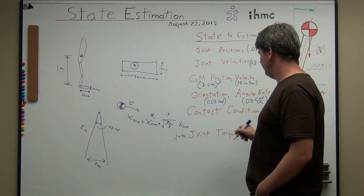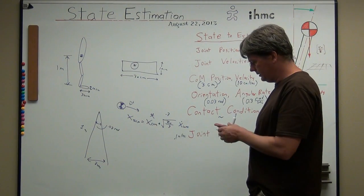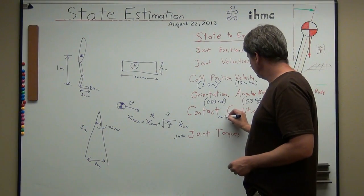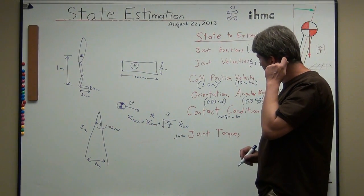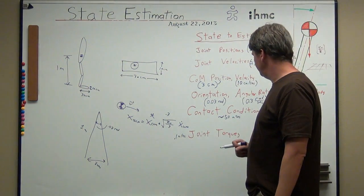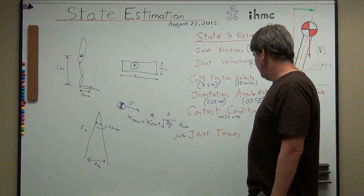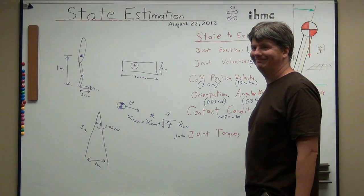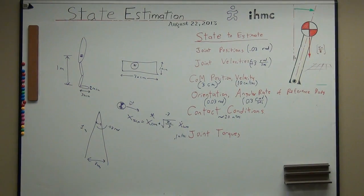Contact conditions: you pretty much have to know that you touched the ground within about 20 milliseconds. On the scale of walking, a tenth of a second is a long time — long enough to start falling. 50 milliseconds is probably too long; about 20 milliseconds is better. Joint torques — we've had many discussions about that; it should just be compared to body weights. So that's approximately the accuracy we need for balancing — rule of thumb.